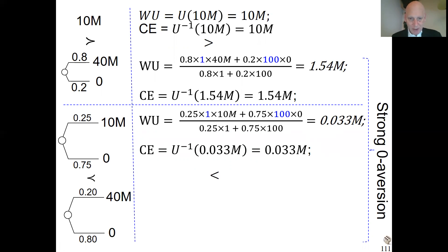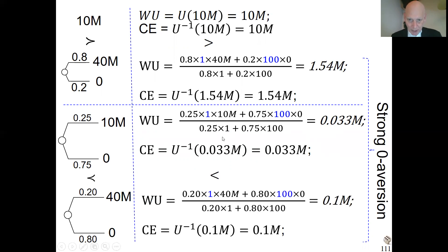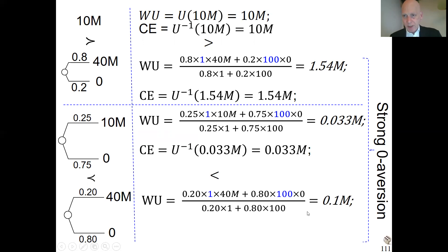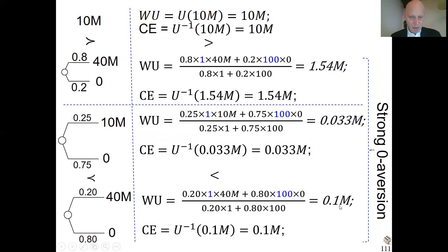The last lottery has a bit of a bigger value. Again here we see much weight given to the zero outcome, like in the second and third lotteries. All of them are hit by that zero aversion. The moment there's a zero outcome in the lottery, it gets a lot of attention, a lot of weight — things are bad. The certainty equivalent is only 0.1 million.